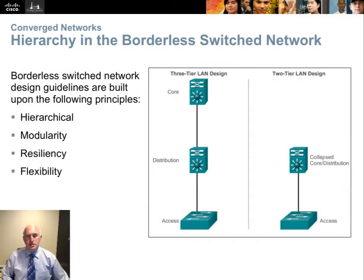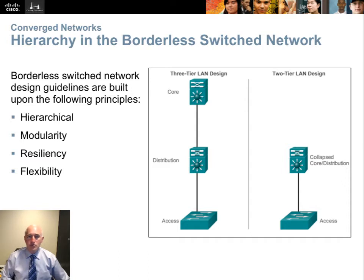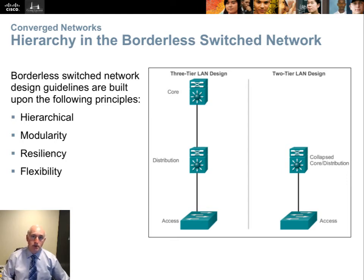To accomplish this, we need a network design model. We have one, and it can be adapted into a second called the compressed or collapsed model. The first is the classic three-tier model — you'll need to know this for the Cisco exam. Both the CCENT and CCNA test you on the three-tier model. You have an access layer, a distribution layer, and a core. Access is where printers, phones, and people connect their devices. This is where you'd find Wi-Fi and Power over Ethernet to power those devices.